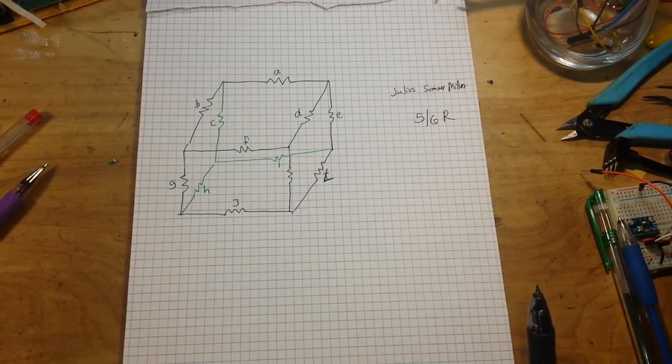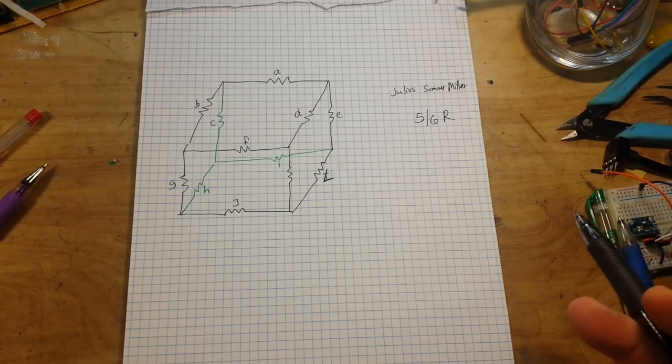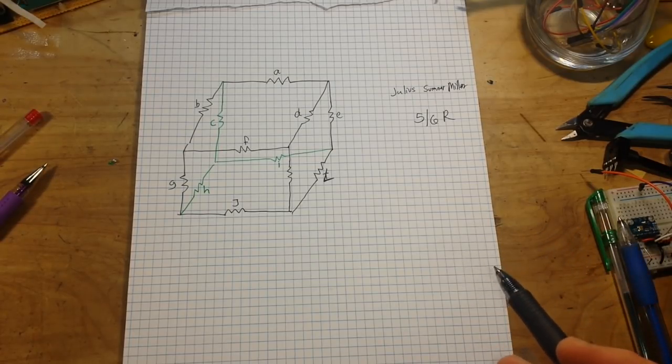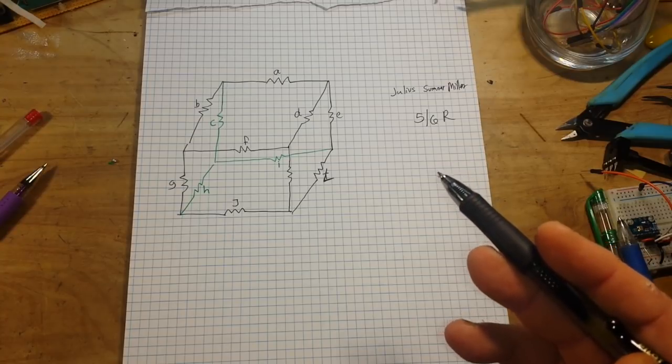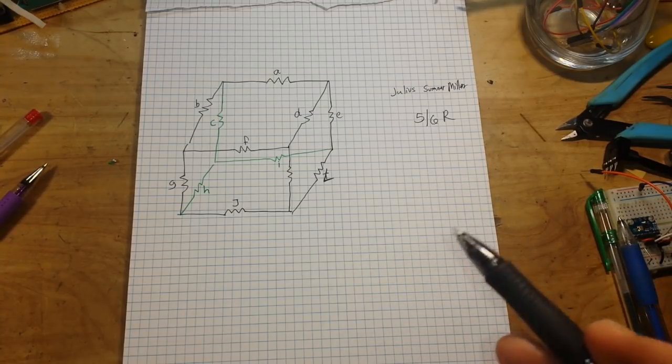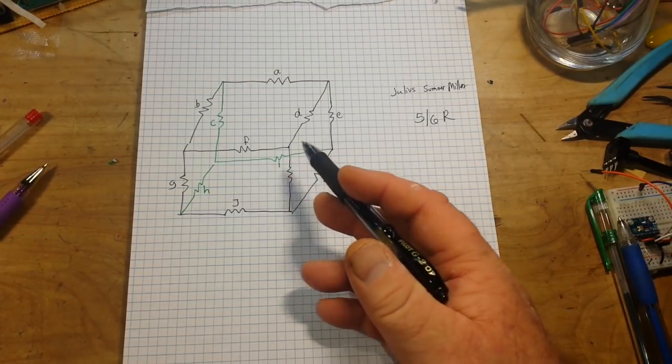The way to do it is pretty simple. It involves just recognizing equipotential points, points of the same voltages, and then shorting them together. Once you do that, we can calculate the parallel resistances and add them up. So let's examine the cube.